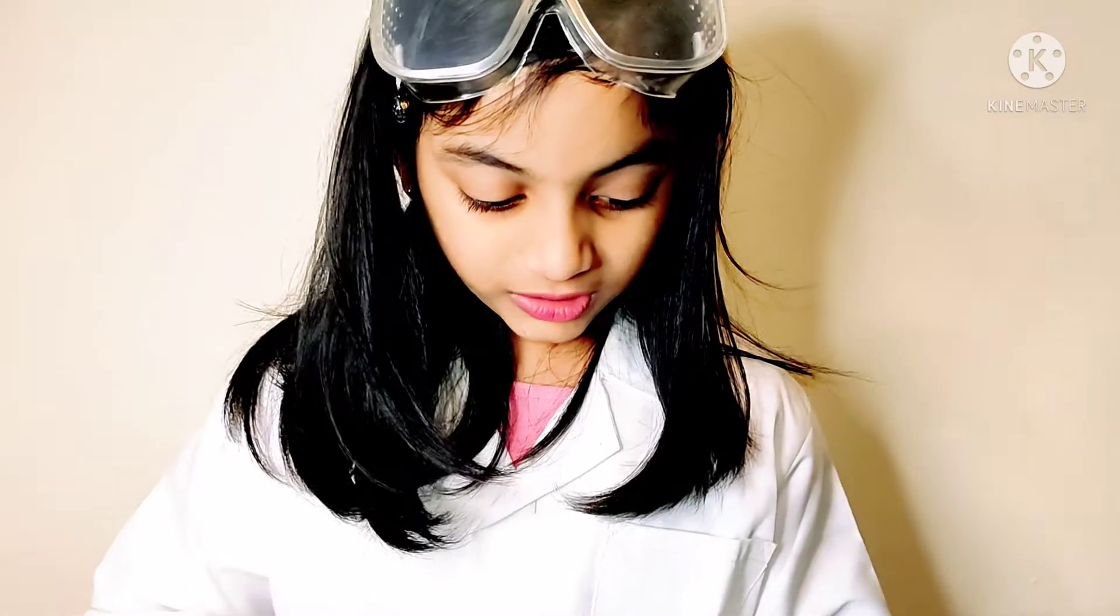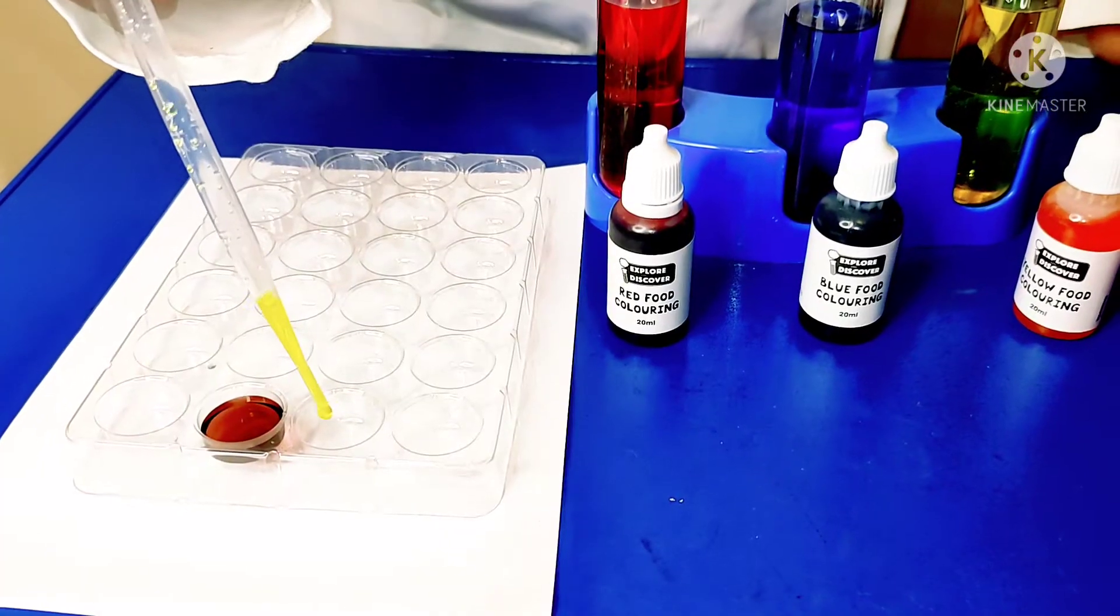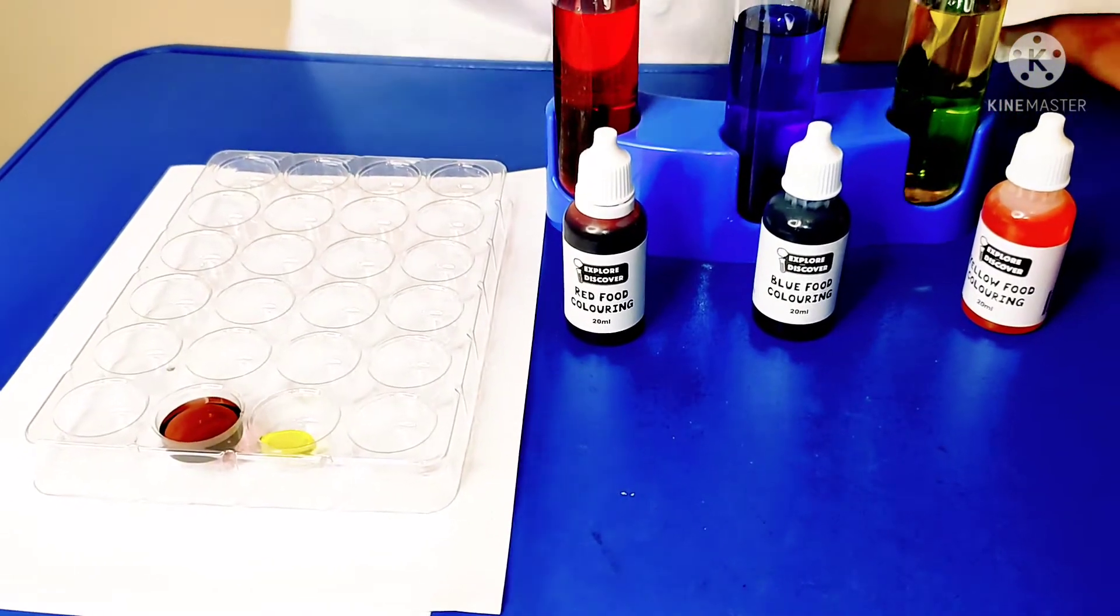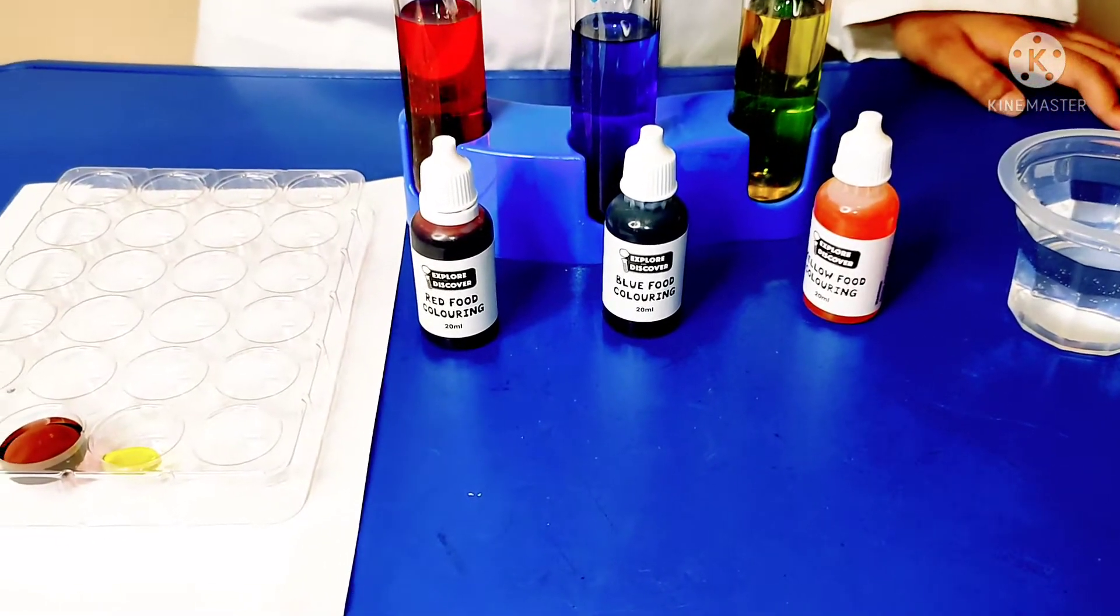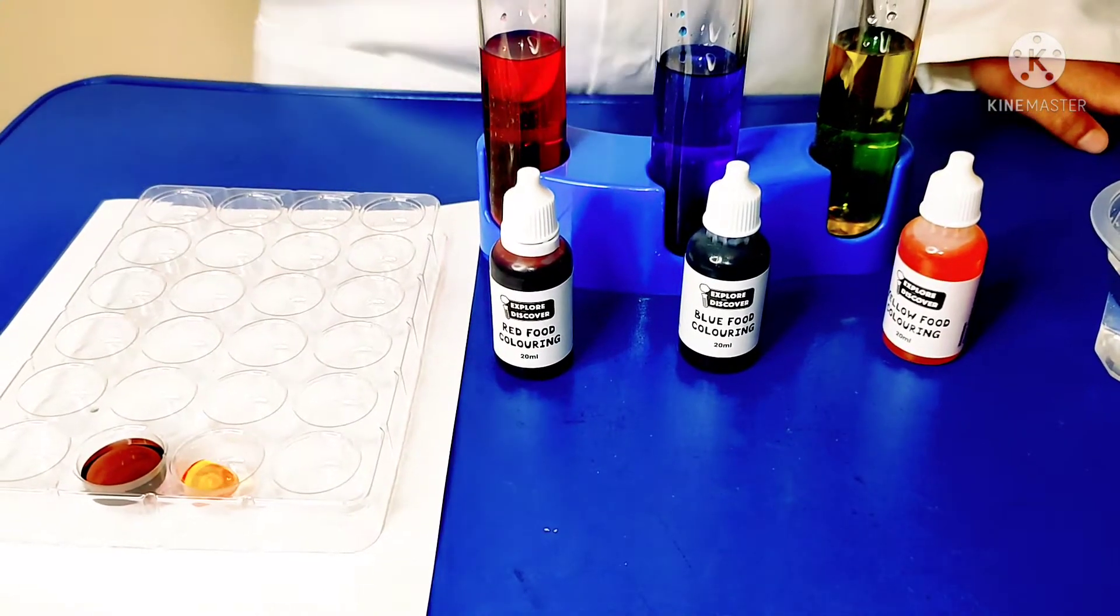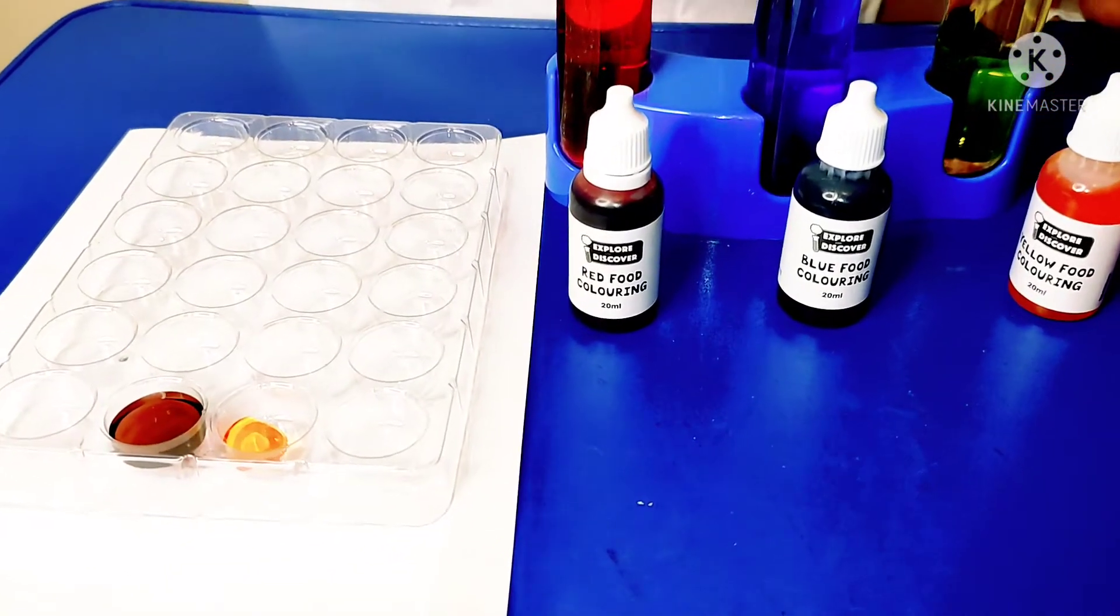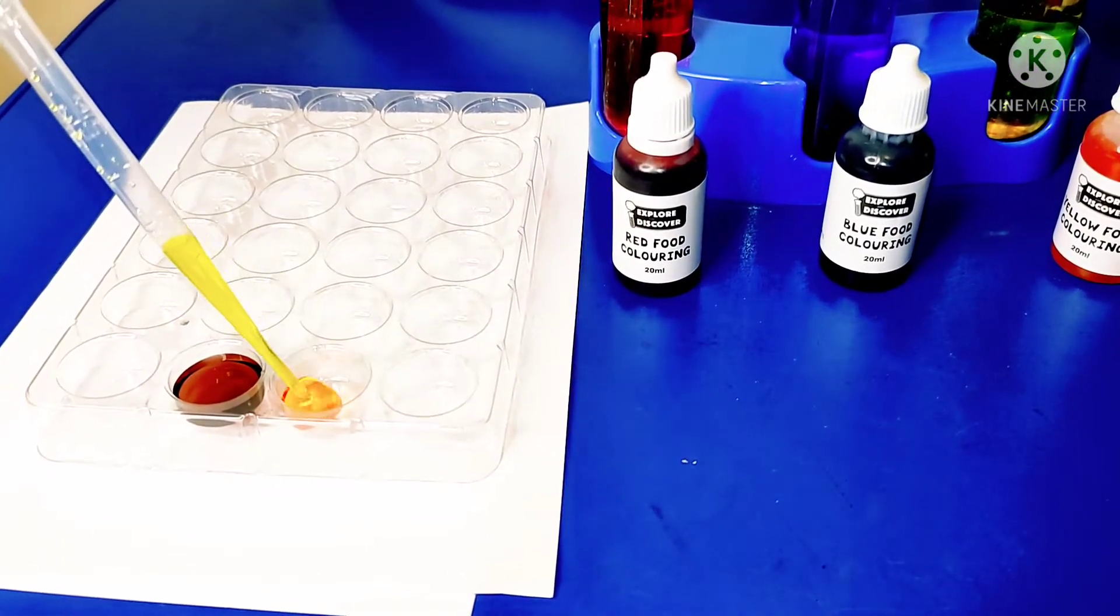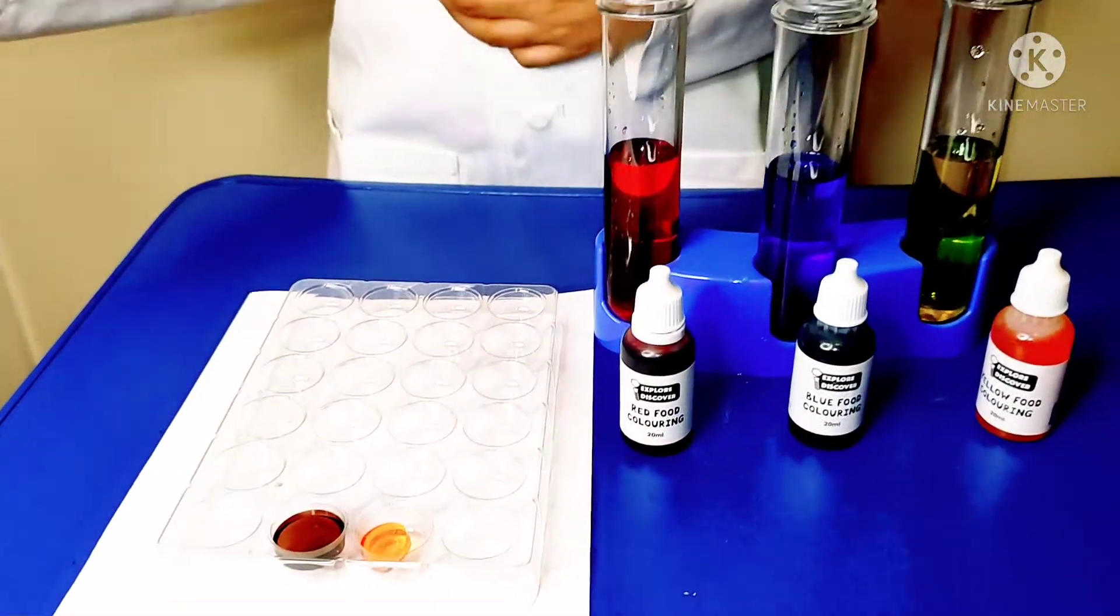And now we're going to do yellow and red. One, two, three. We're just going to put all the drops because it's not many. We're going to put it out. Ooh, looks interesting. This is the yellow color. Look at this, it's like a yellow orange.